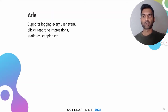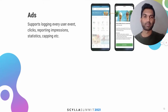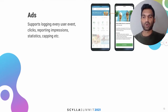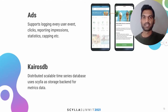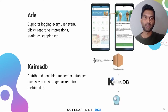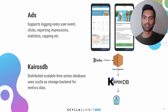ScyllaDB supports logging every user event with respect to clicks and impressions that get created when a user sees an ad, and also supports frequency capping. We store all the statistics to improve our ads. Kairos is a distributed time series scalable database that uses ScyllaDB as the backend storage to store metrics data. We have a pipeline that reads data from Kafka, uses Kairos and its stats to write it to Kairos and then to ScyllaDB.